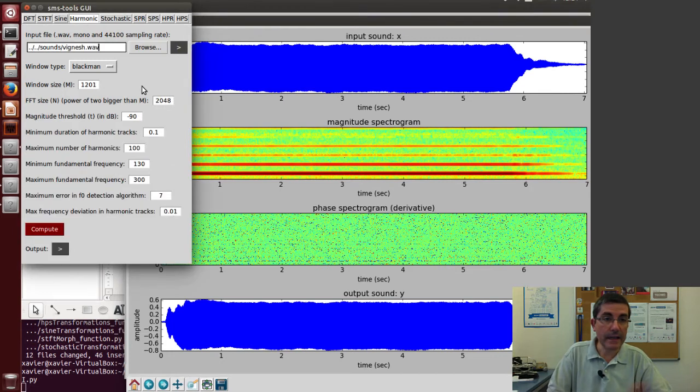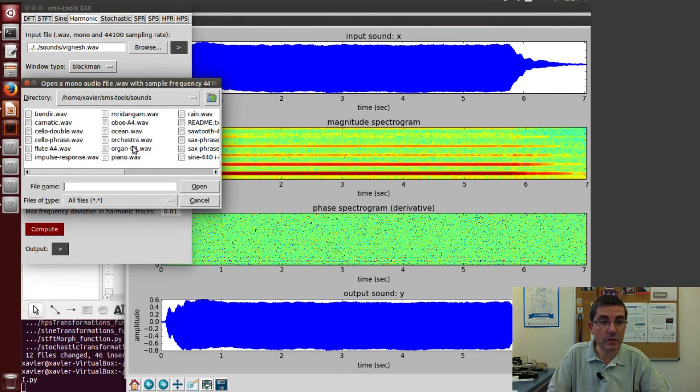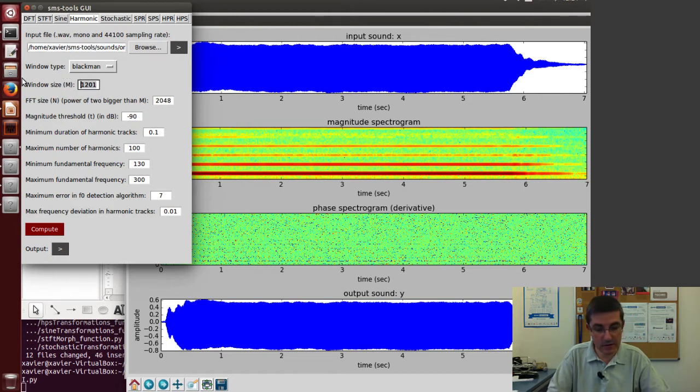Now let's do the harmonic analysis using the same parameters: the organ, Blackman, 2006 samples, and 4096 FFT size. Now we have to choose the parameters to identify the peaks and harmonics. The magnitude threshold: minus 90 looks reasonable. The duration of the harmonics: since we're in a long stable note, we can put 0.2 seconds or more. The number of harmonics: there aren't that many, so 30 or 40 harmonics should be plenty.